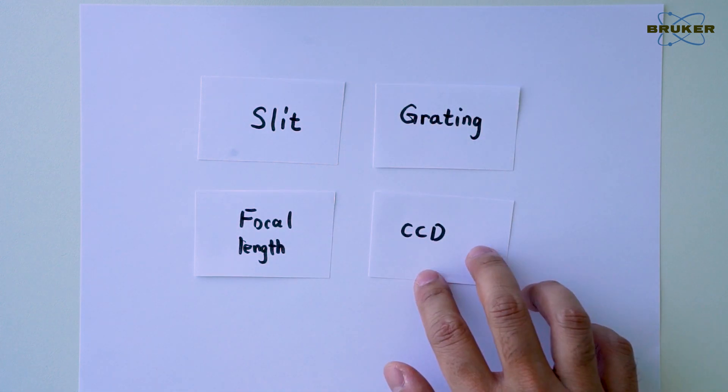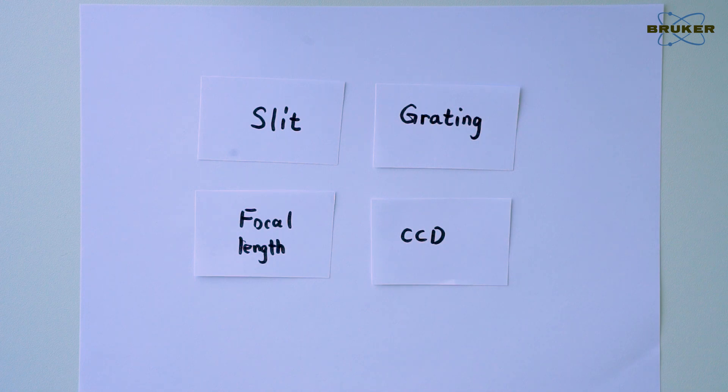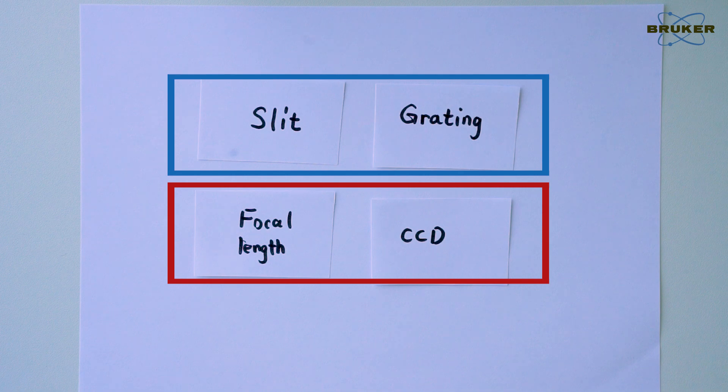But how is the spectral resolution determined? It's mainly decided by four factors: the size of the entrance slit of the spectrometer, the line density of the grating, the focal length of the spectrometer, and the format of the CCD. Normally, we can only influence the first two, and the latter two are fixed for a spectrometer.